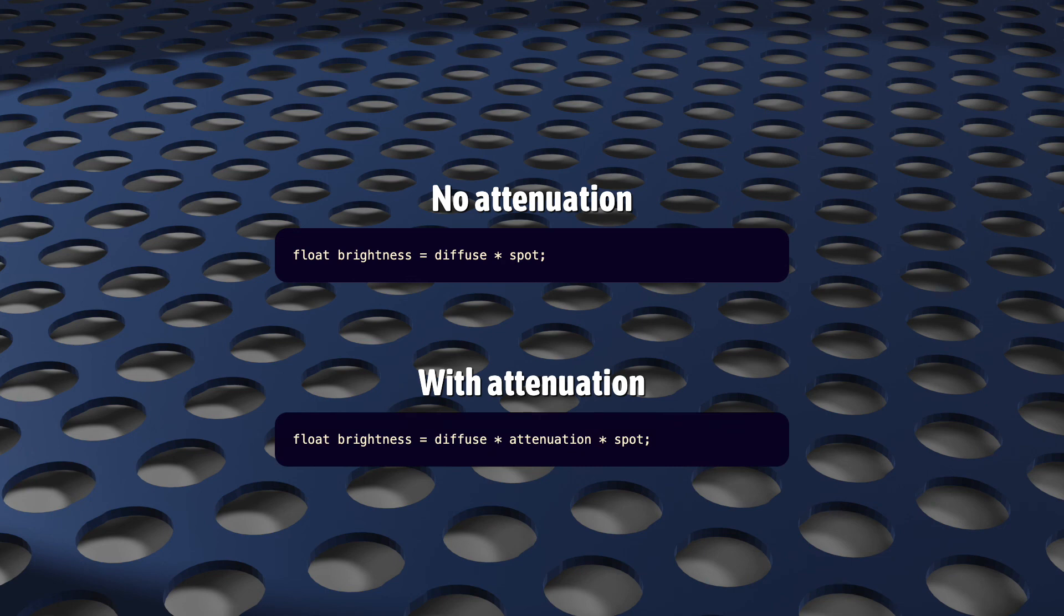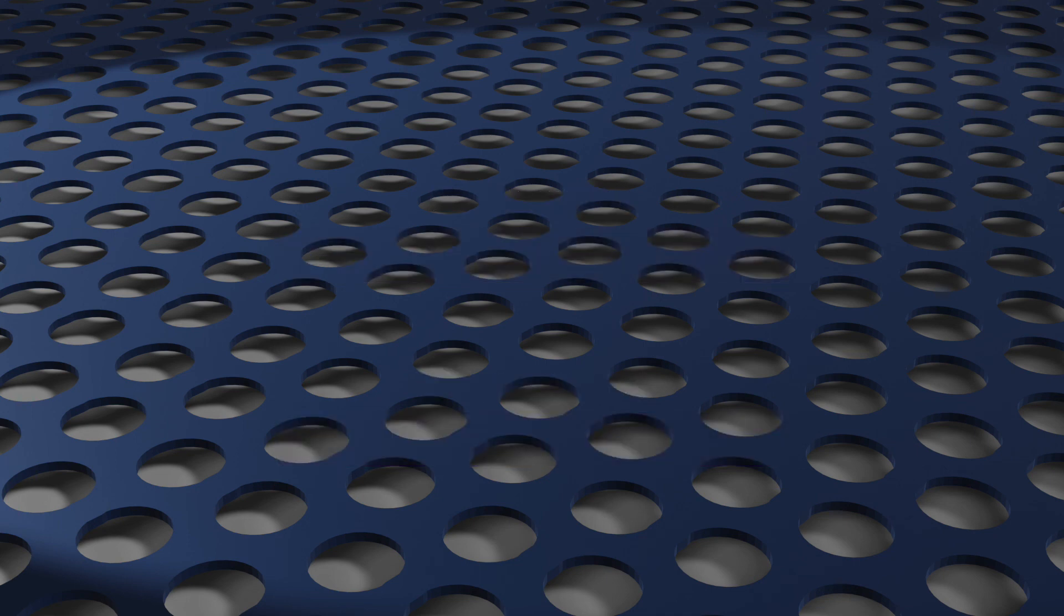But if it is important, the final calculation will probably look something like this. Our total brightness is the product of our diffuse lighting and our spotlight calculation and our attenuation. This is an artistic choice. And which way you go is totally up to you.